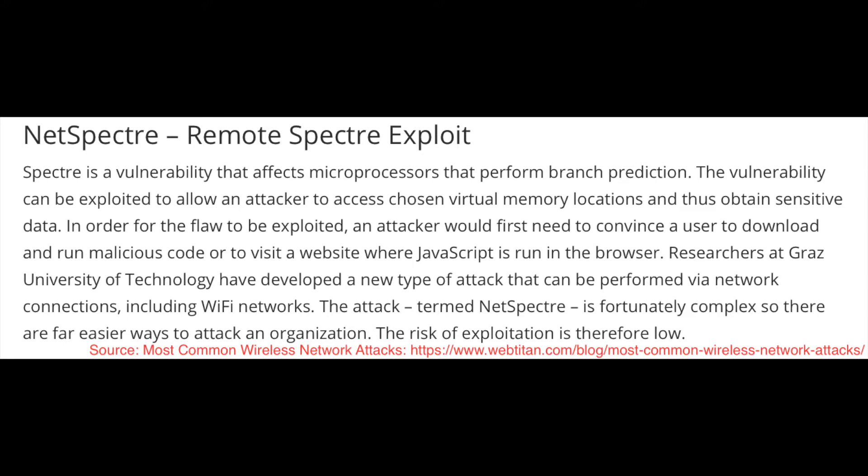When exploited, Spectre allows the attacker to access chosen virtual memory locations and obtain sensitive data. For the flaw to be exploited, an attacker would first need to convince a user to download and run malicious code, or visit a website where JavaScript runs in the browser. This means the vulnerability can be triggered through phishing, social engineering, or installation of malicious code — and then the vulnerability is exploited through that malware. It's a reminder that memory itself can be exploited.